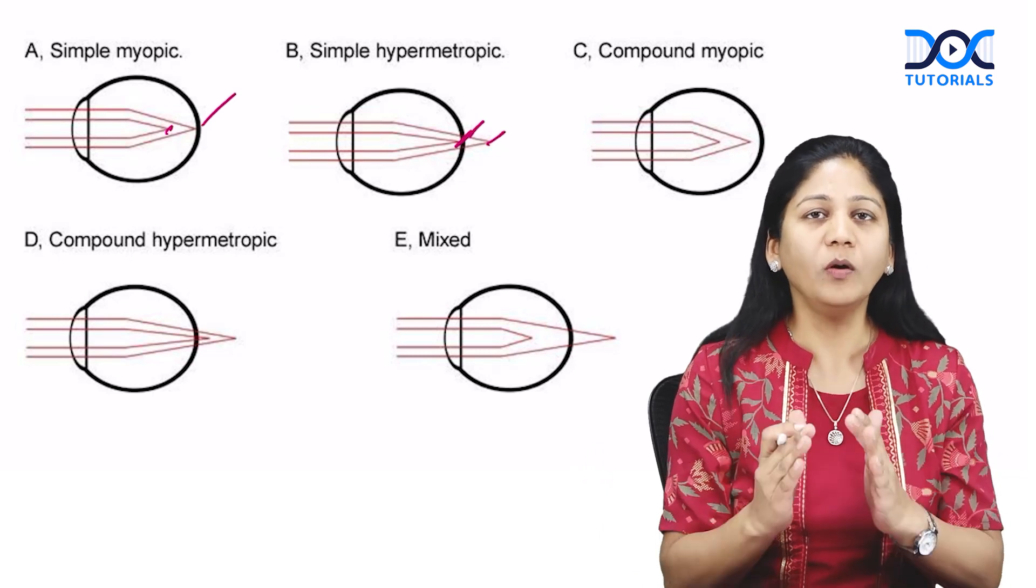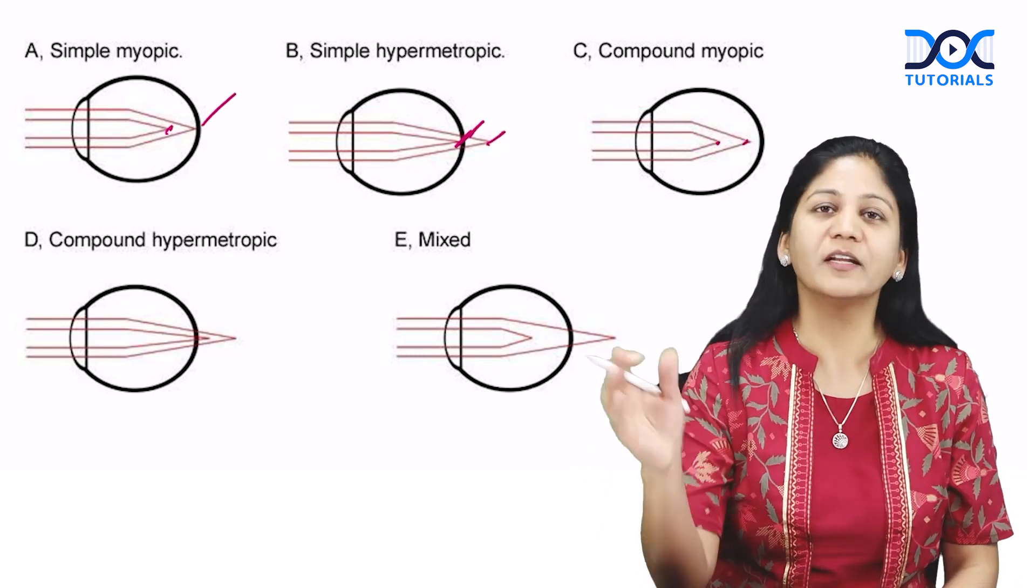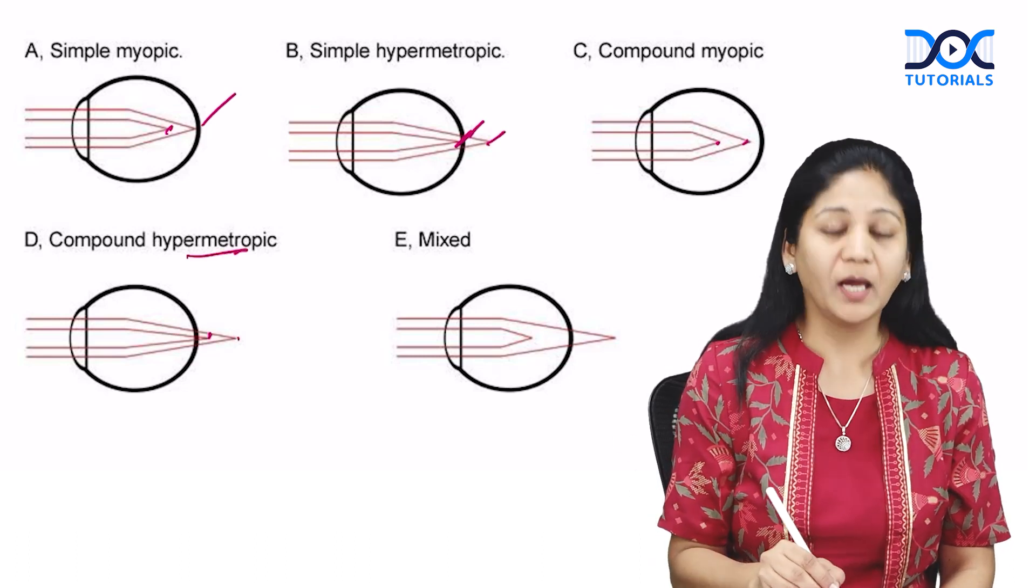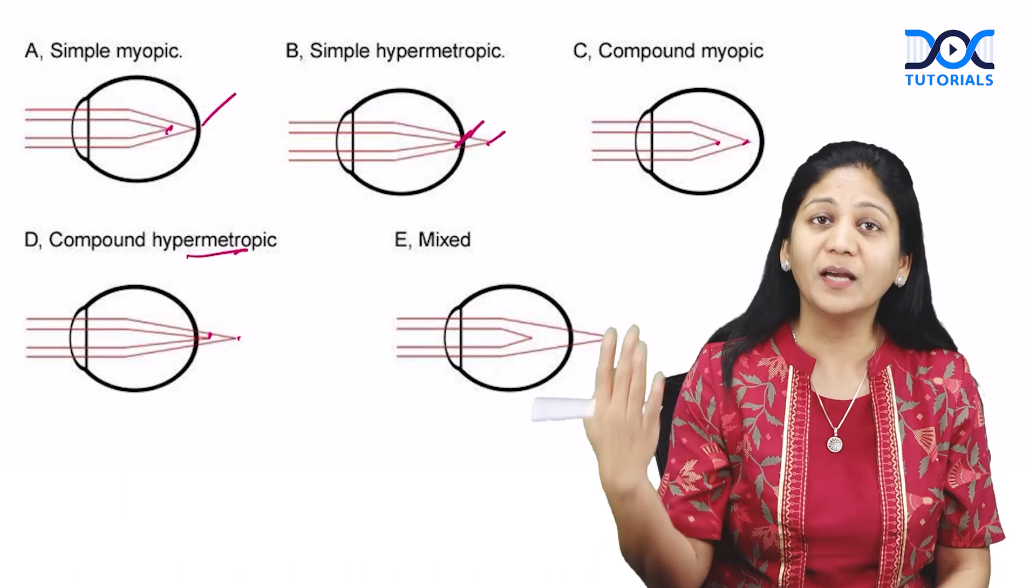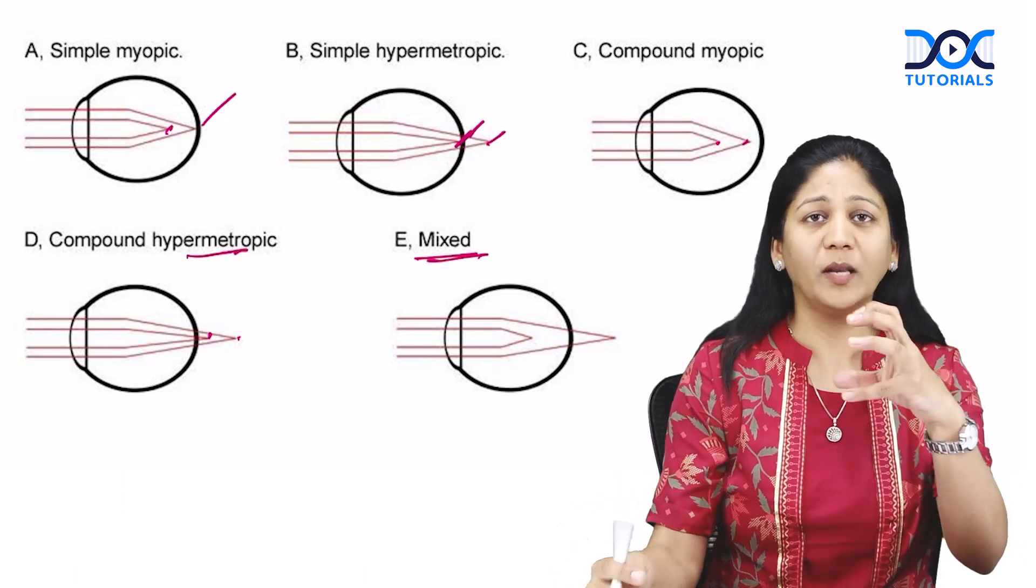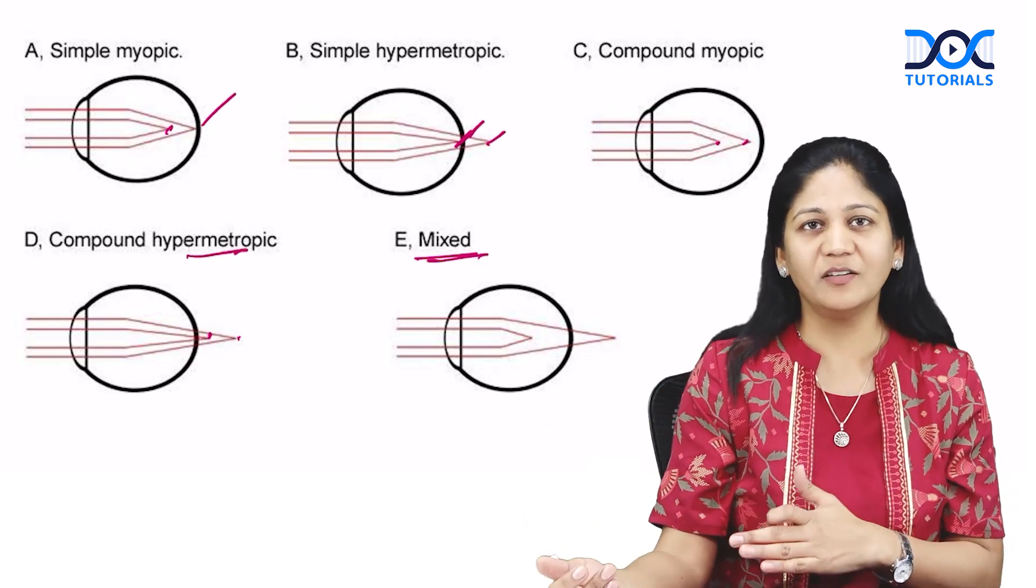Compound myopic is when both points of focus are in front of the retina. Similarly, compound hypermetropic has two points of focus behind the retina. Mixed astigmatism has one in front and one behind the retina.